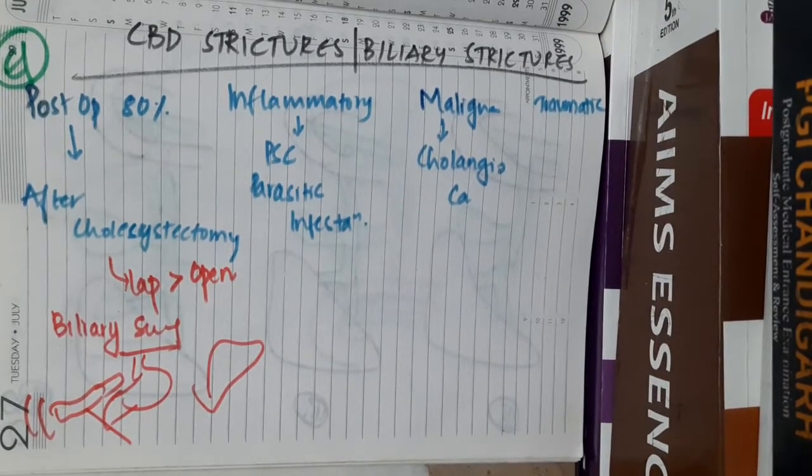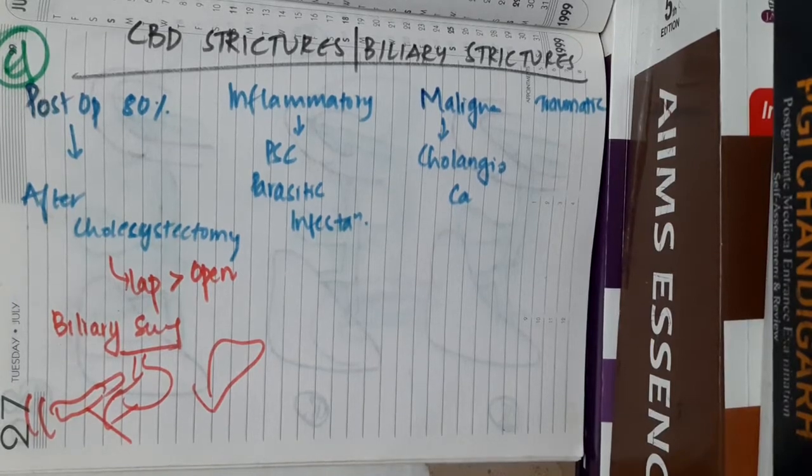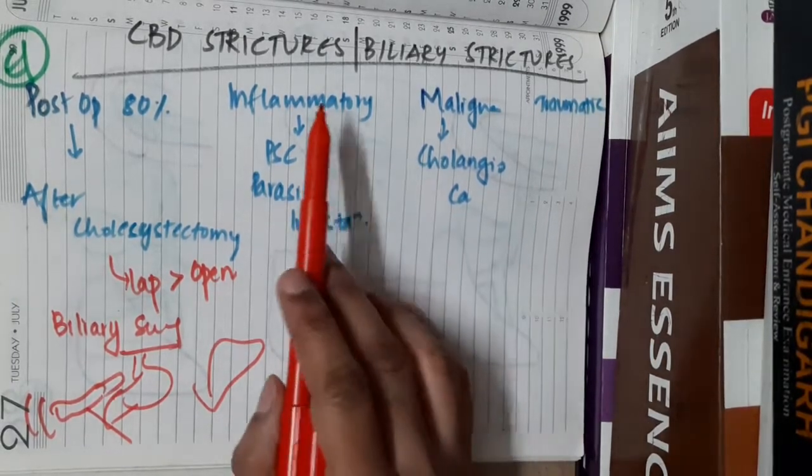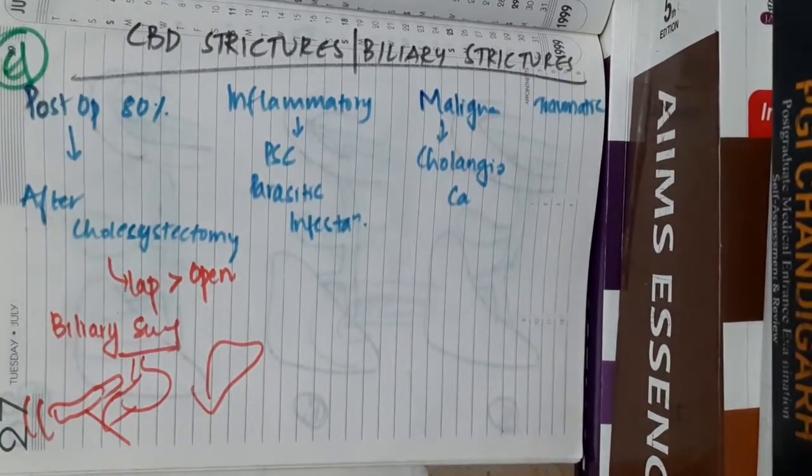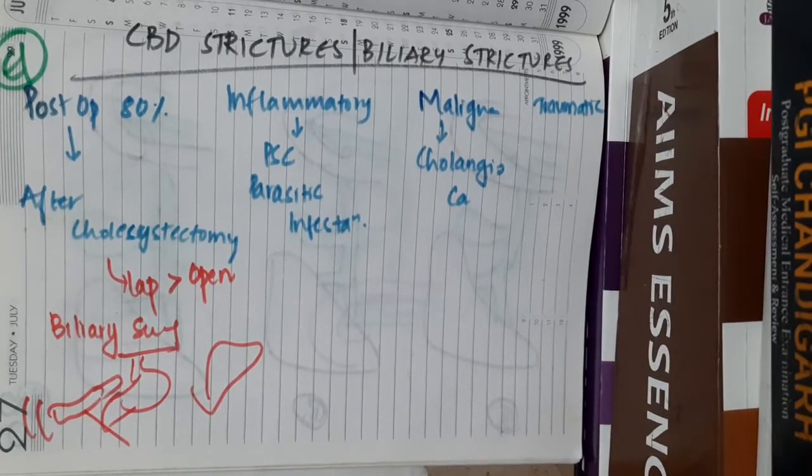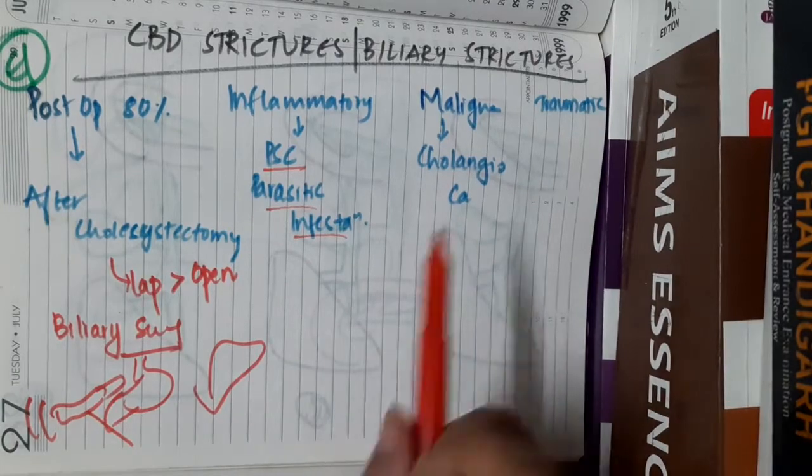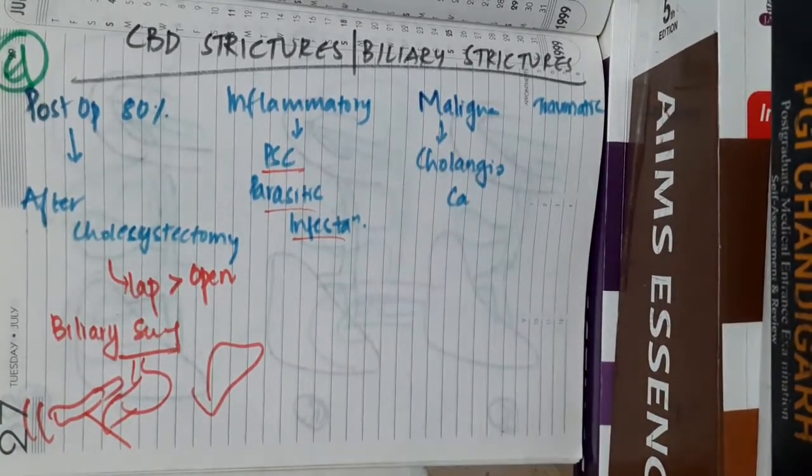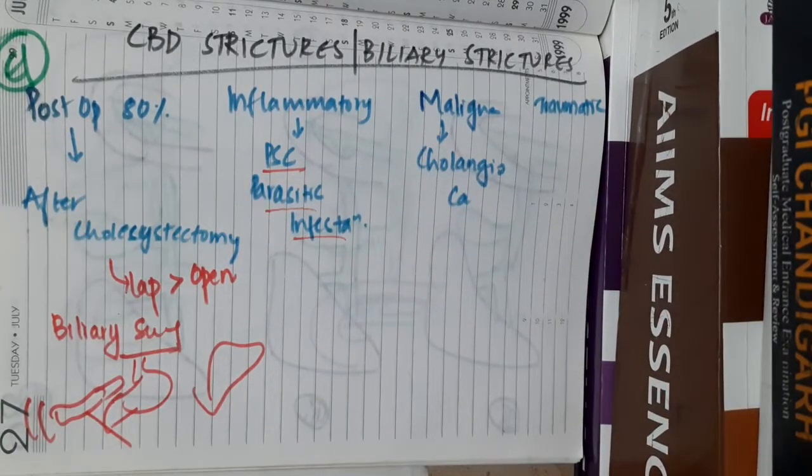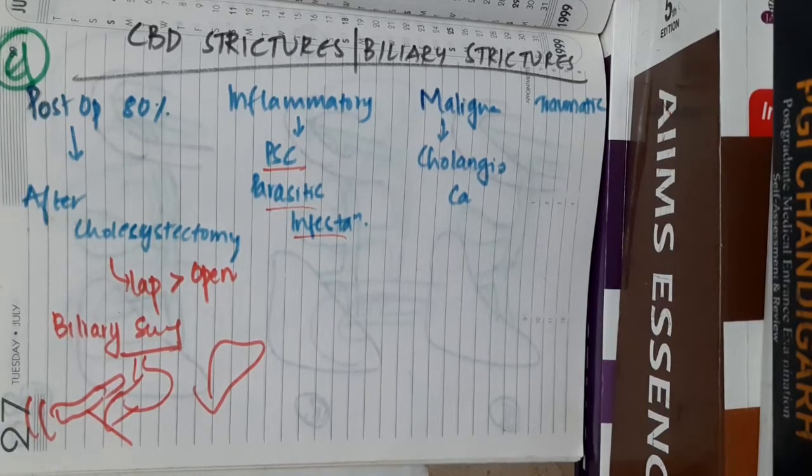There is also an increased chance of common bile duct stricture formation from inflammatory causes like primary sclerosing cholangitis and parasitic infection. It occurs in malignancy, mostly cholangiocarcinoma, and in traumatic conditions.